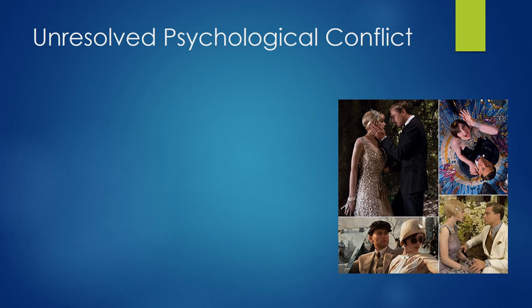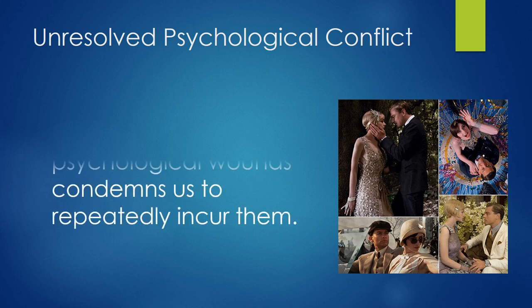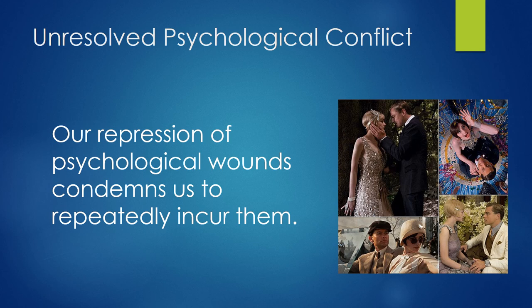Gatsby felt abandoned by his parents, but more so by Daisy twice — first when she married Tom, and second when he loses her on the night of Myrtle's death. We can see that the novel shows us how romantic relationships can enable us to repress our psychological wounds. In this way, we can examine The Great Gatsby for the fear of closeness, the anxiety, and the result of this fear of intimacy produced in these characters. We end our lesson on a psychoanalysis of The Great Gatsby — but please remember, this is not a complete psychoanalytic reading. It is just one way to approach it. Thank you.